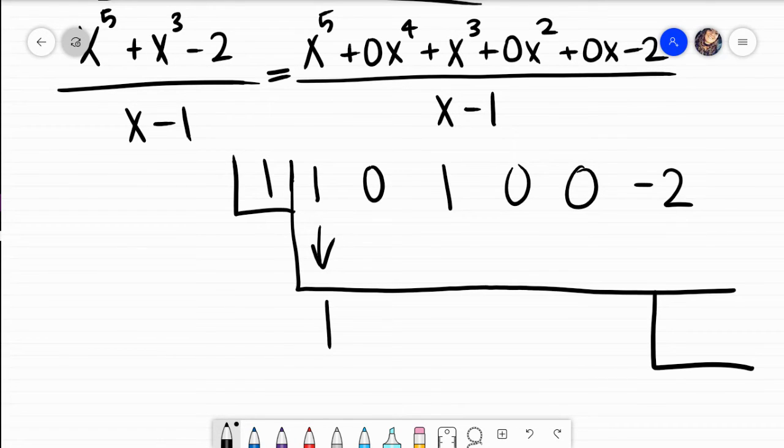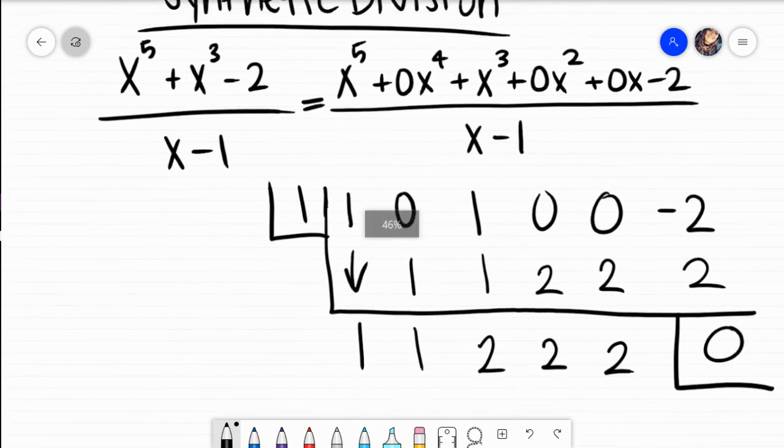And what I do here is 1 times 1 is 1. The combination of 0 and 1 is 1. 1 times 1 is 1. The combination of 1 and 1 is 2. 1 times 2 is 2. 1 times 2 is 2. The combination of 0 and 2 is 2. 1 times 2 is 2. The combination of 2 and negative 2 gives me 0.